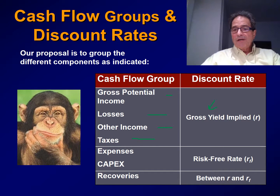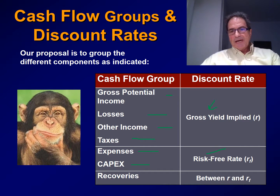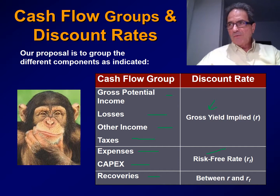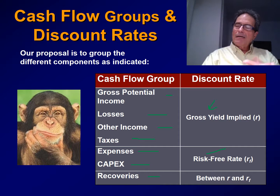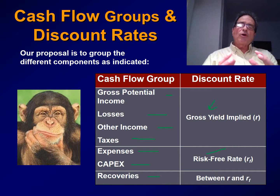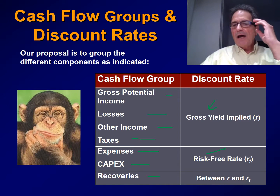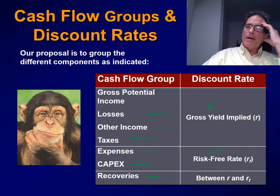The second category will be discounted at the risk-free rate. This includes expenses and CAPEX, because we assume that expenses and CAPEX are relatively stable and easy to project into the future. The final category is recoveries, which are the expenses charged back to the tenants and recovered by the owners. But recoveries depend both on expenses and on the rent. So the risk of recoveries is somewhere in between R and RF — somewhere in between the implied discount rate and the risk-free rate.